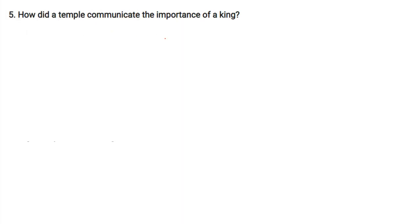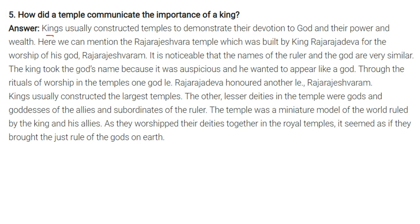Question: How did a temple communicate the importance of a king? Kings usually constructed temples to demonstrate their devotion to God, and also their power and wealth. The Raja Rajeshwara temple was built by King Raja Rajadeva for the worship of the god Raja Rajeshwara — the names of the ruler and the god were very similar. The king took the god's name because it was auspicious and he wanted to appear like a god. Through the rituals of worship, one god, Raja Rajadeva, honoured another, Raja Rajeshwara. The other lesser deities in the temple were gods and goddesses of the king's allies and subordinates, making the temple a miniature model of the world ruled by the king and his allies.